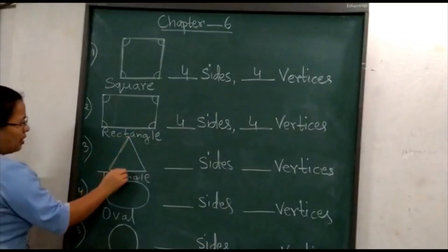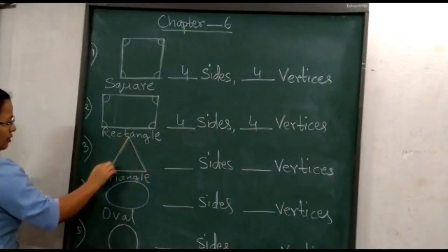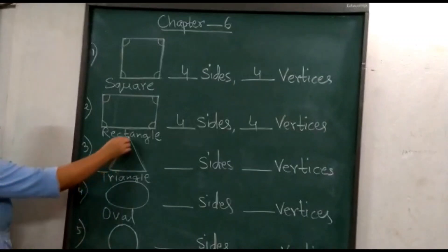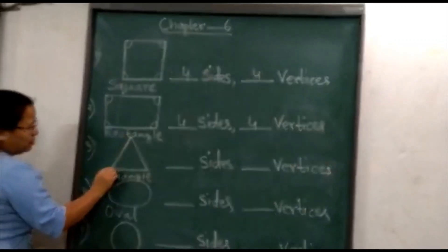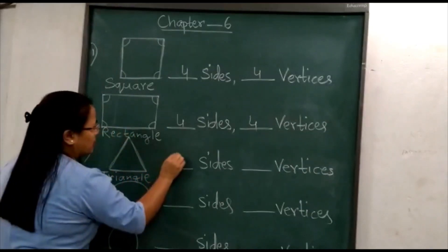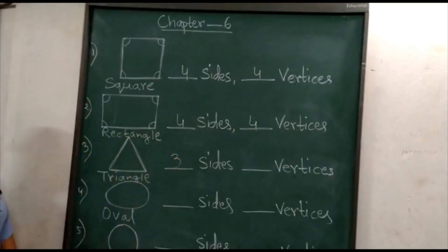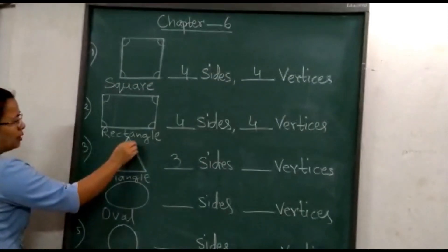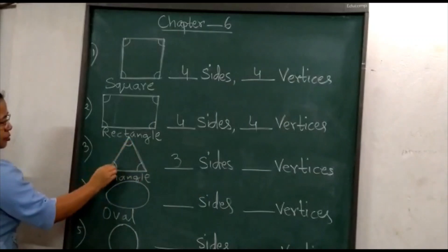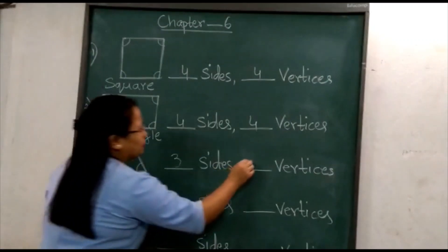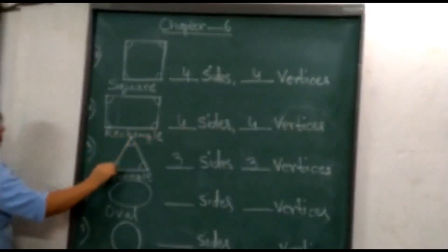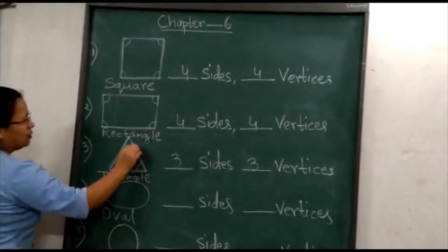Now let's come to triangle. Let's find out how many sides this triangle has. 1, 2, 3 — 3 sides. And vertices: 1, 2, 3 — 3 vertices. So a triangle has 3 sides and 3 vertices.